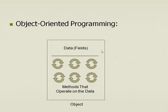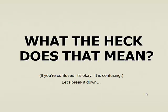This right here is a visual representation of an object. Right here you would have data — your variables — and then you've got your methods. These little circular things represent a method. So what does all this mean? If you're confused, that's okay, because it is confusing at first. It takes a while to wrap your mind around the entire concept of object-oriented programming, but just hang on and we'll see if we can make it happen.